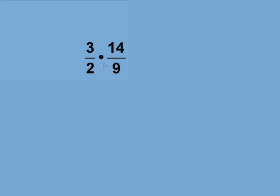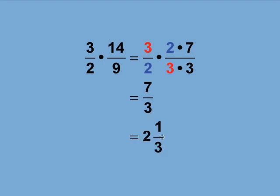Also, 2 and 14 have a common factor of 2. The highlighted numbers factor out. We are left with the improper fraction 7 thirds. This can be rewritten as the mixed number 2 and 1 third.